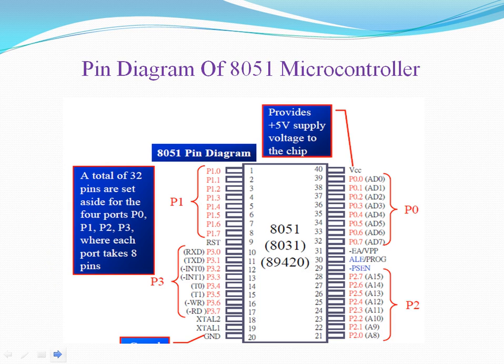This is the basic pin diagram of the 8051 microcontroller. It has 4 ports: P0, P1, P2, and P3. All 4 ports are bidirectional. On port 0 you have to connect external pull-up resistors as it does not have them internally. On port 3 you can see some special functions like serial interface, interrupts, timer, and read/write operations for connecting external memory.